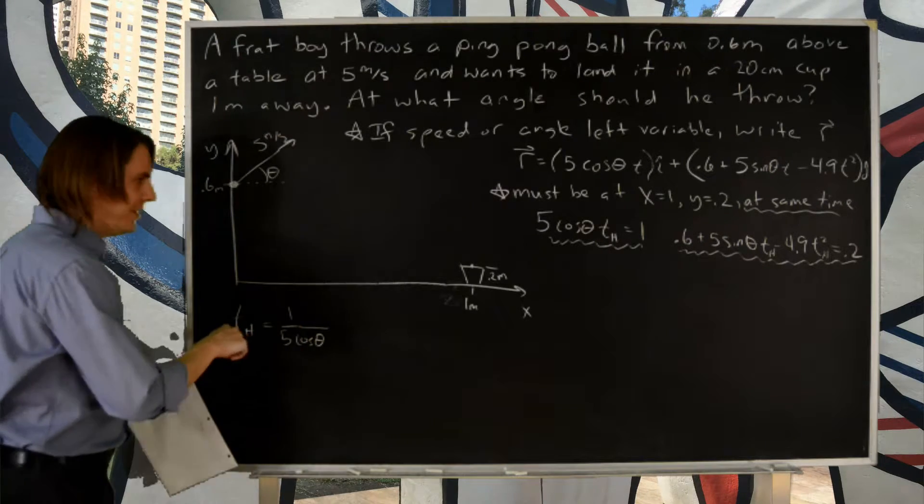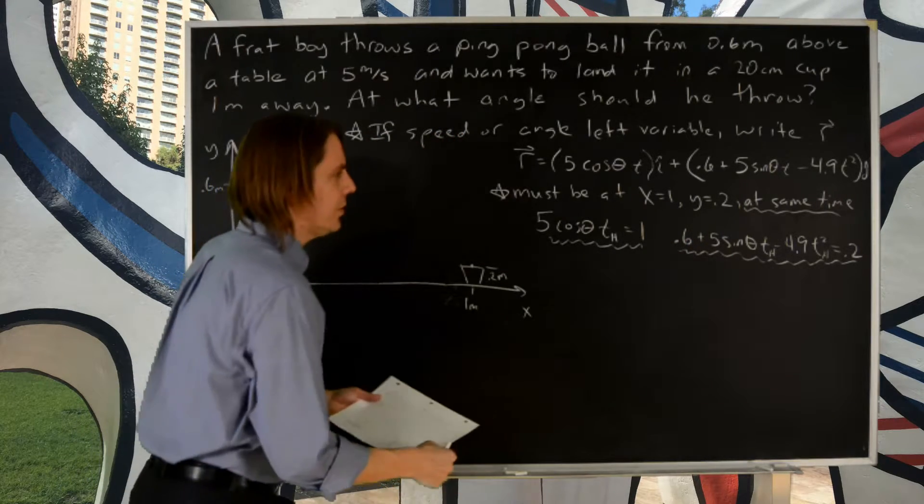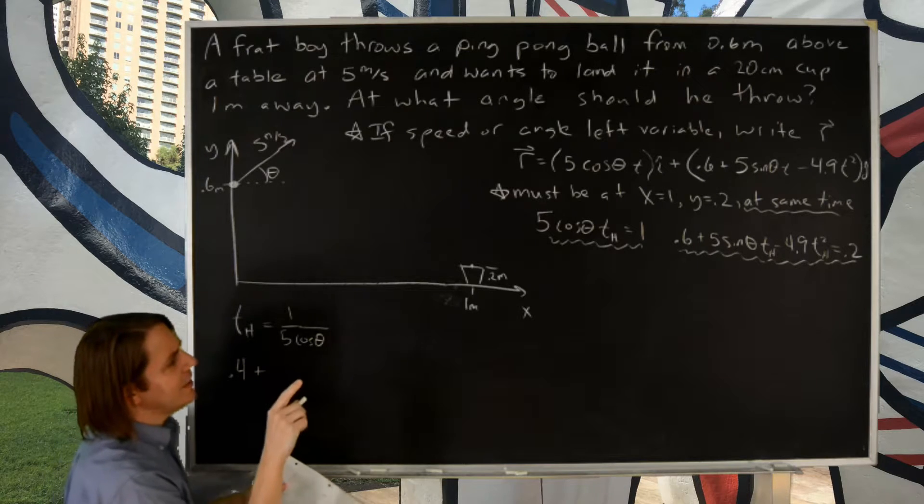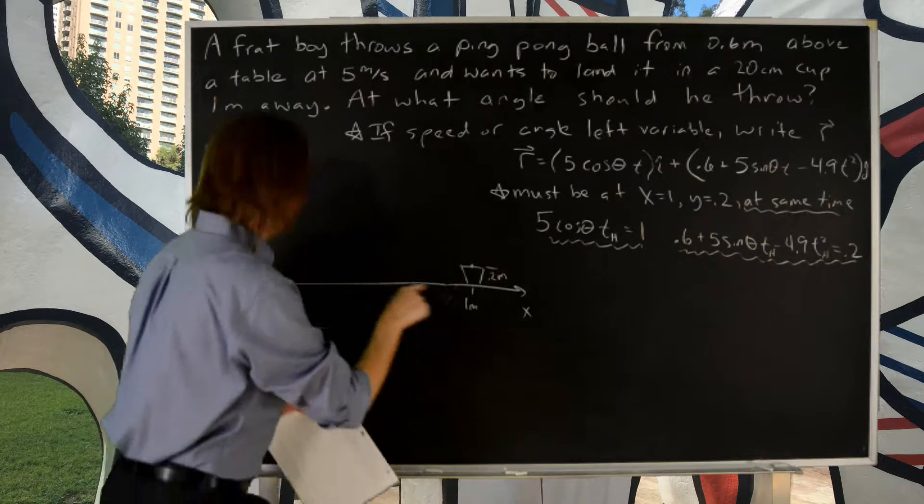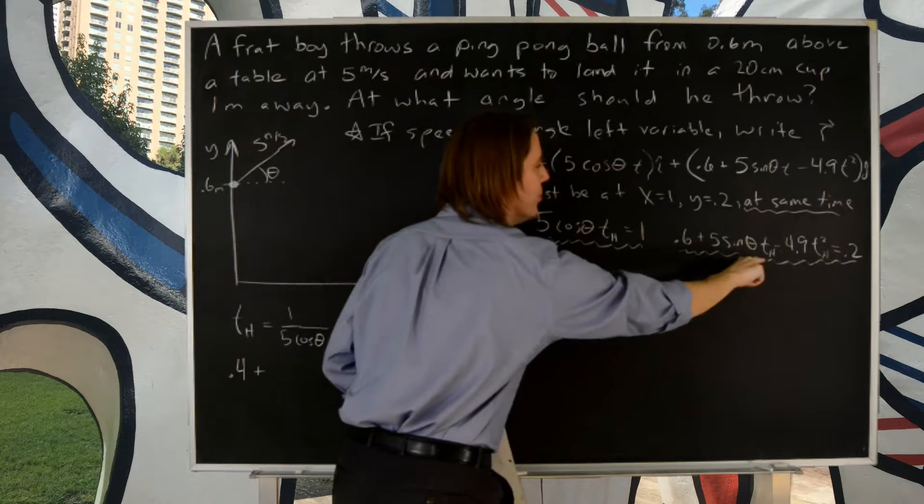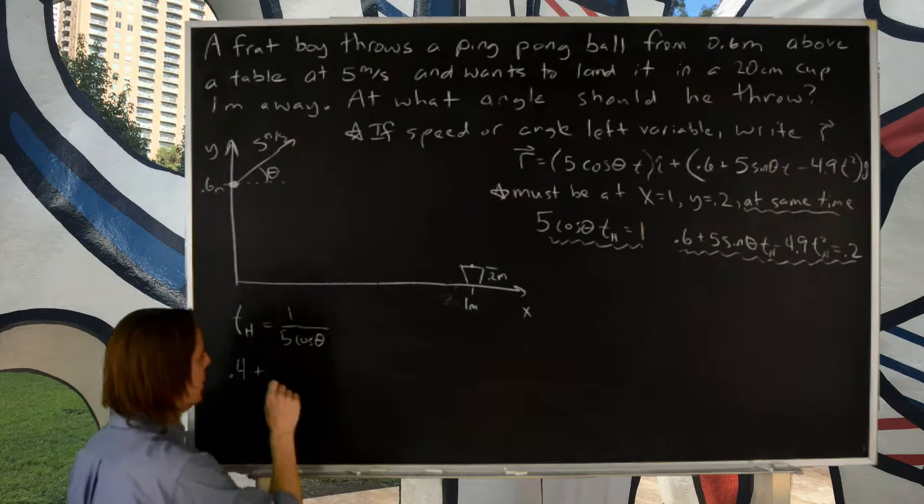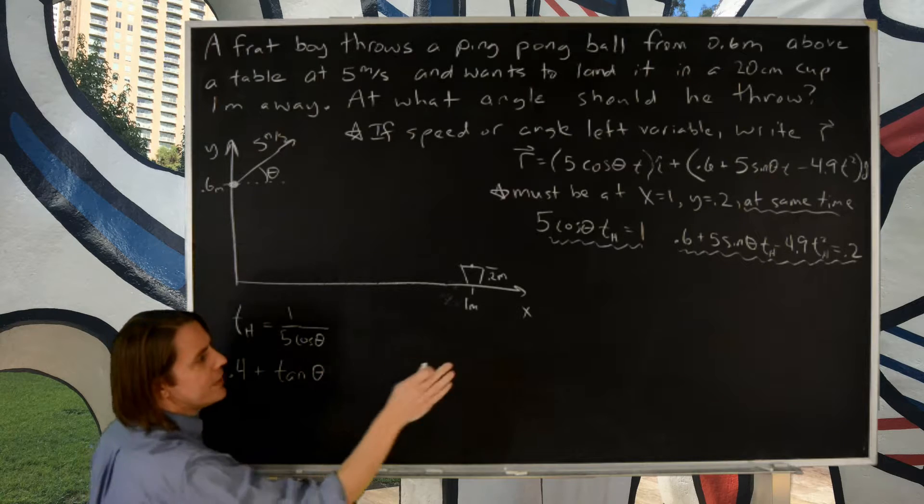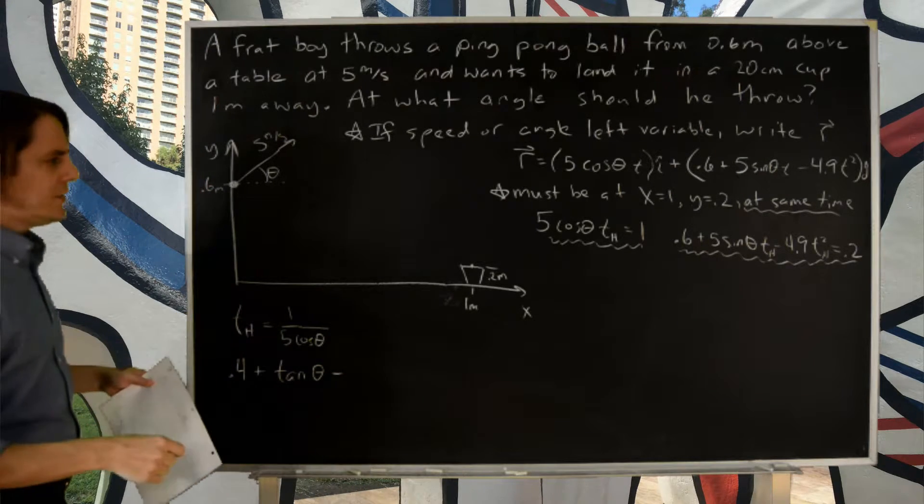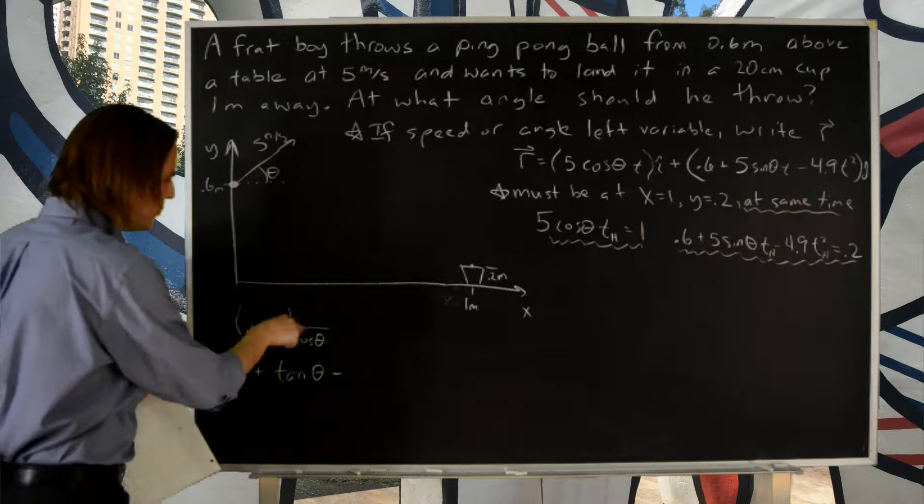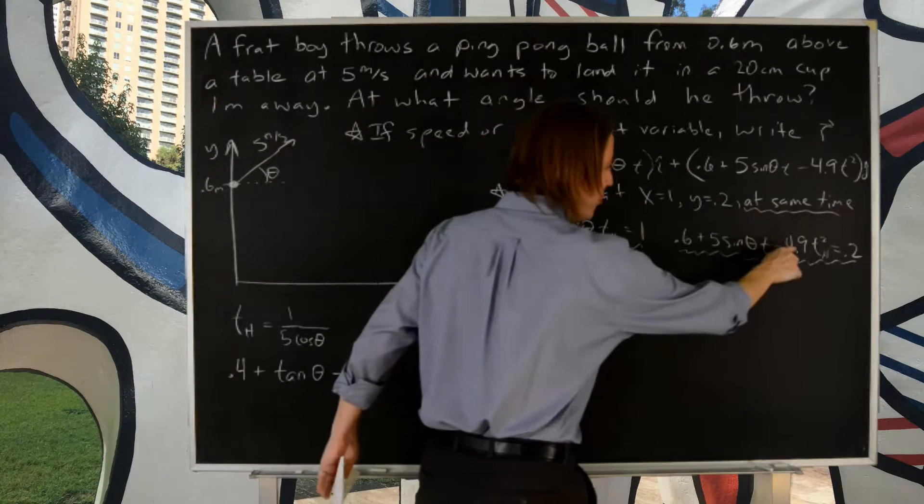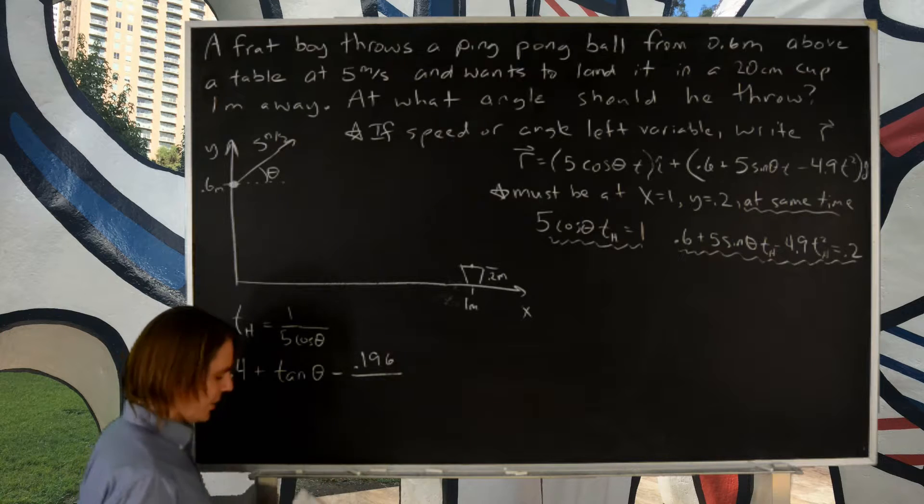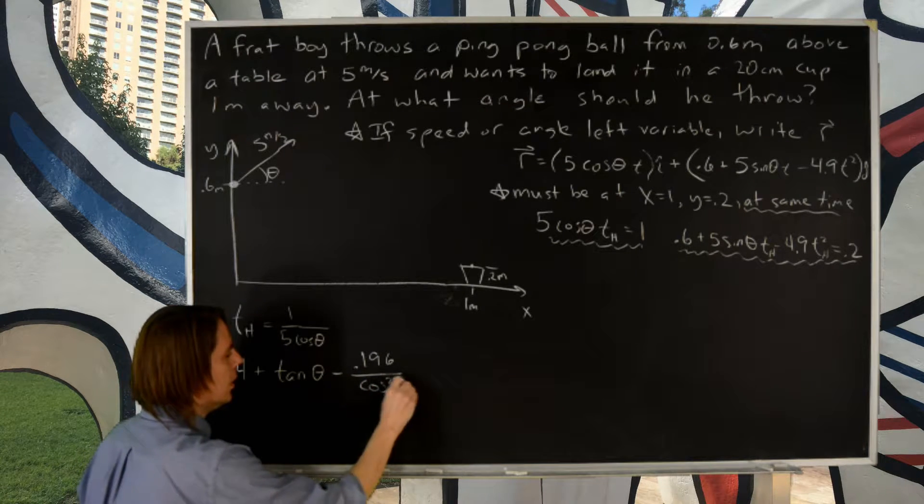Let's see, next we would then plug this t into this expression. So let me see what that's going to look like. I'm going to pull the 0.2 over, subtract it from the 0.6. I'm going to get 0.4 plus, and then I'm going to have 5 sine theta divided by 5 cosine theta. The 5s cancel and sine over cosine becomes tangent theta. So this next term is just tangent theta. There's no th because I'll plug in for th. And then the last term minus 4.9 t squared. So that's going to be minus 4.9. We square this, it becomes 1 over 25 cosine squared theta. So we've got 4.9 over 25, that's about 0.2, a little less than 0.2, it's about 0.196, if you're running on a calculator, over cosine squared theta equals 0.